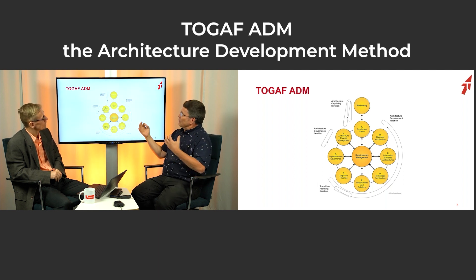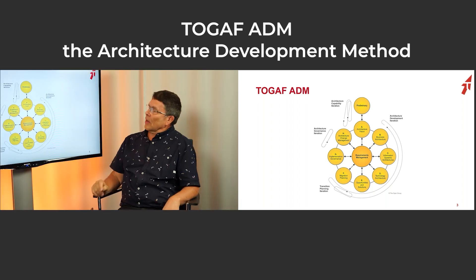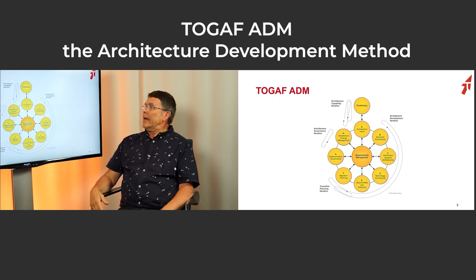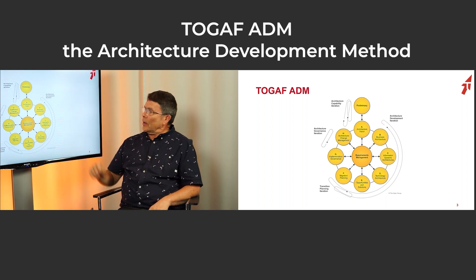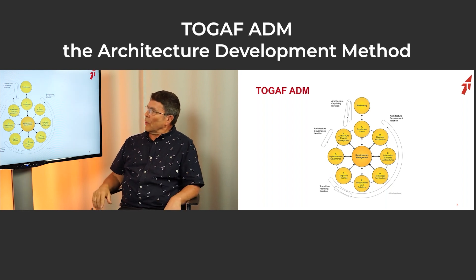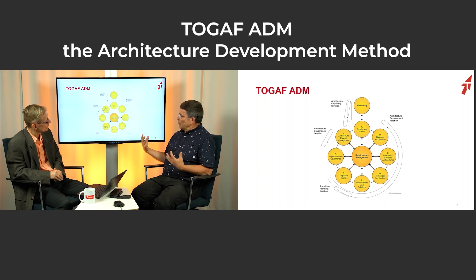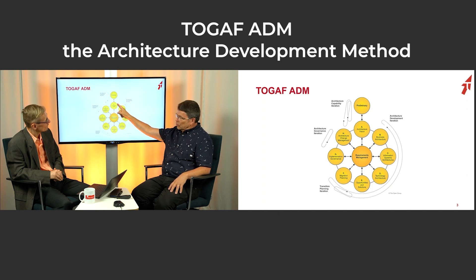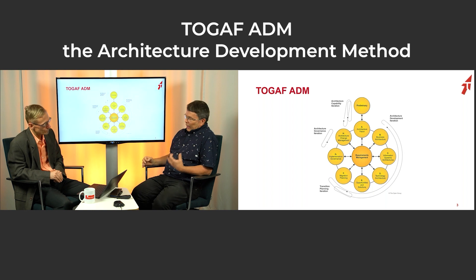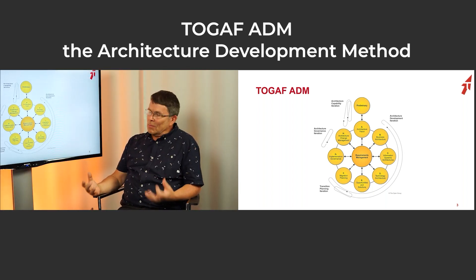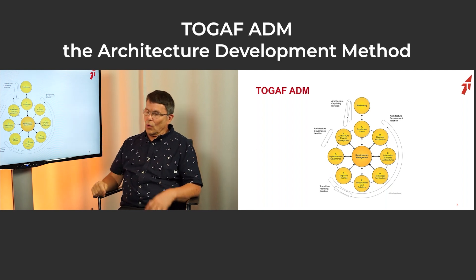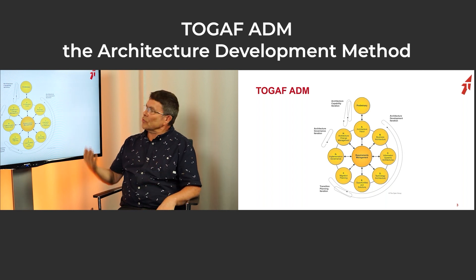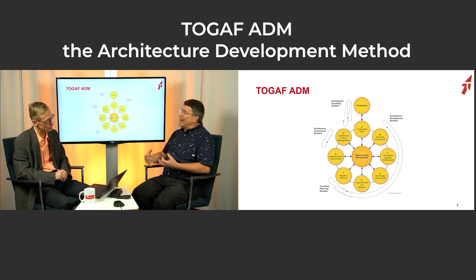The trigger for the preliminary phase is 'we need to do something,' and the endpoint is 'now we have established an architecture capability.' Then when you actually do the architecture you always start from phase A — architecture vision — which is really about scoping. This is about understanding what we are supposed to do: how much, how deep, how broad, for whom, what is the point of this. This is the discussion you have with whoever has asked you to do the architecture.